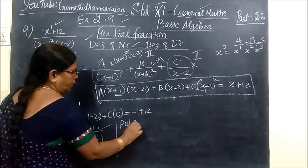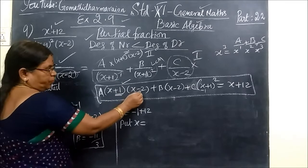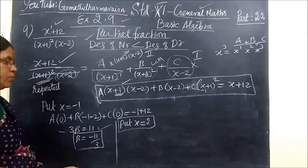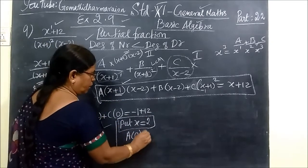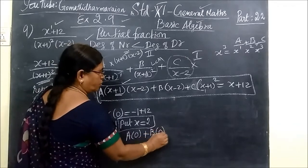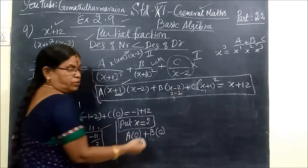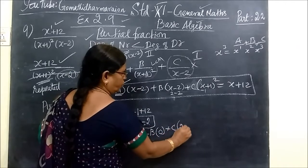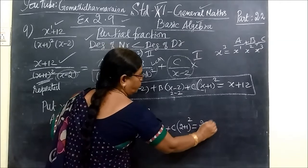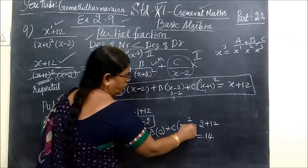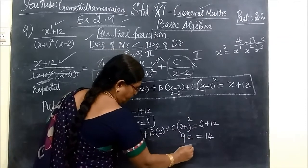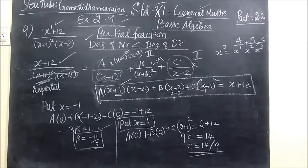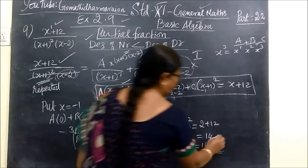Then next one, put X equal to 2. This one is 0, and this is also 0. Then C bracket 2 plus 1 whole square equal to 2 plus 12, which is 14. So 9C equals 14. That means C equal to 14 by 9. So we check the answer for the C value, 14 by 9. This is correct.